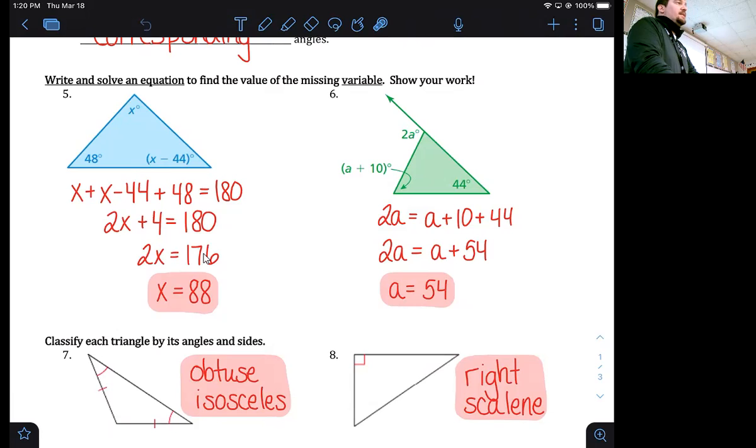When I assigned it on the homework, it asked you to find what the actual measure of the angle was. So once you found 54 you would multiply it by two and say that your angle is 108 degrees. But on the quiz, I just took that part off where you just have to solve for a. So 2a, that exterior angle, is equal to a plus 10 plus 44. 10 and 44 makes 54. Subtract the a because I got variables on both sides, you get 1a equals 54 degrees.